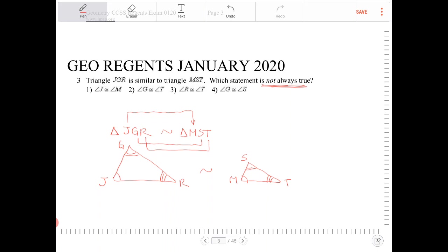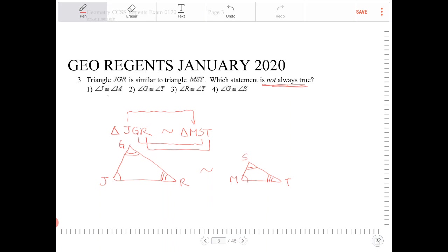J congruent to M, that is true. G congruent to T, that is not true. G does not correspond to T. So this is our answer here.